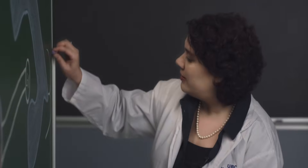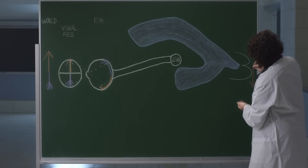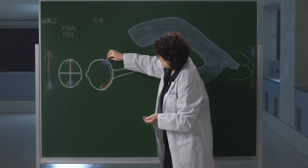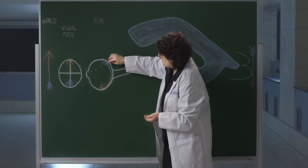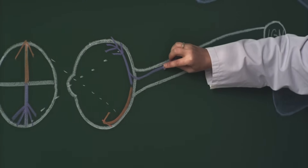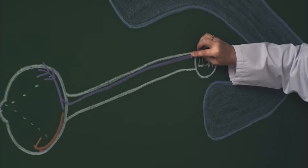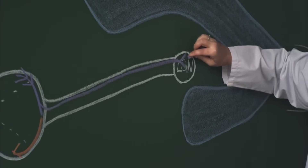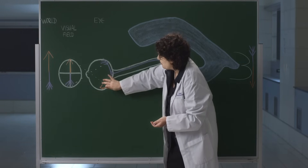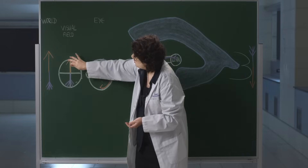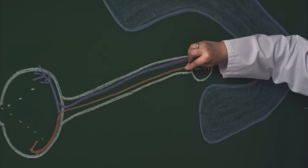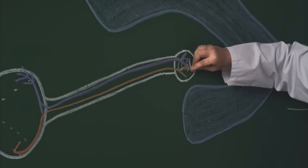This inverted image on the retina projects in that same inverted way all the way to the cortex. Fibers in the upper retina contain information about the lower visual field. They'll travel along the optic nerve and the optic tract to the lateral geniculate nucleus, where they will synapse. And the same is true with the fibers from the lower part of the retina — remember, they contain information from the upper visual field. They're also going to travel down the optic nerve and the optic tract to reach the lateral geniculate nucleus.